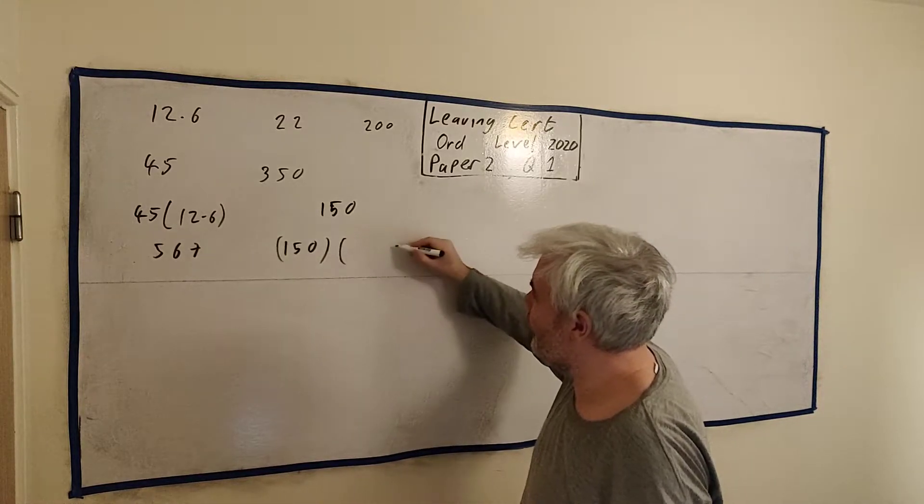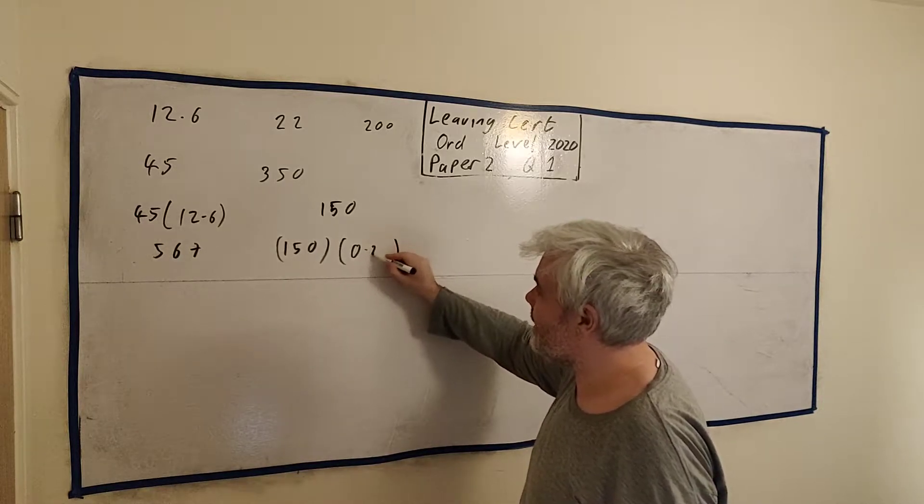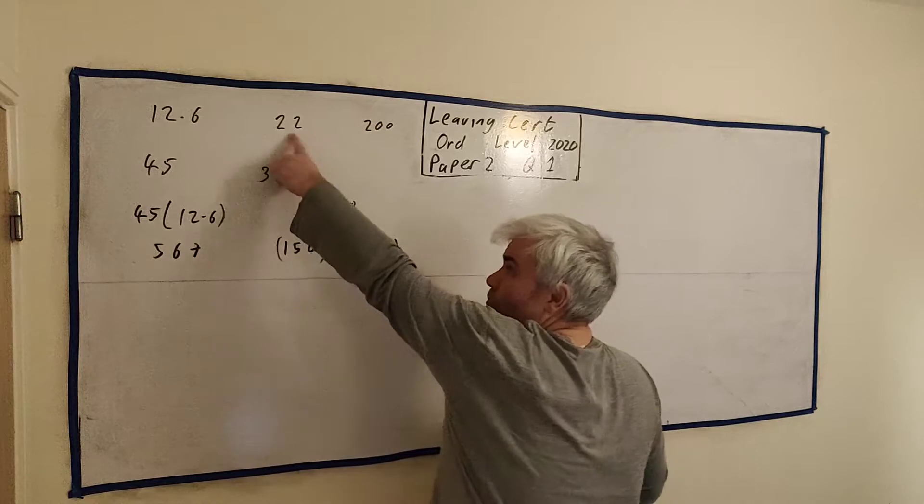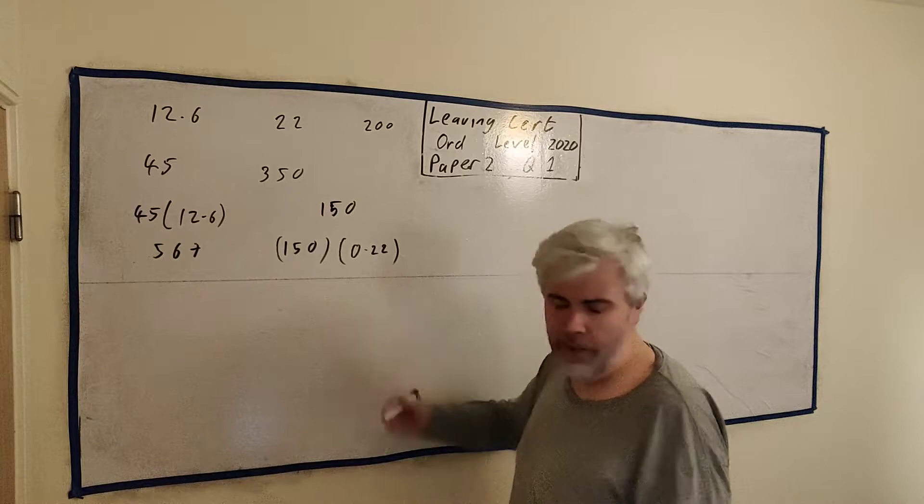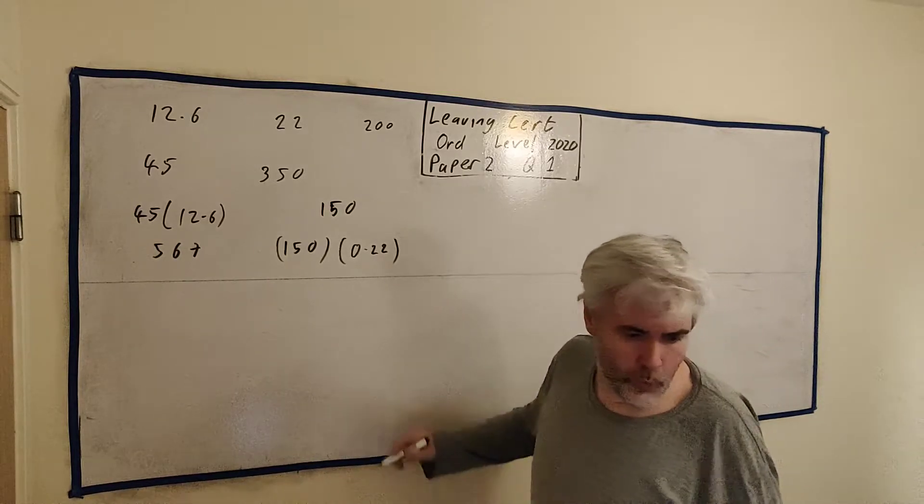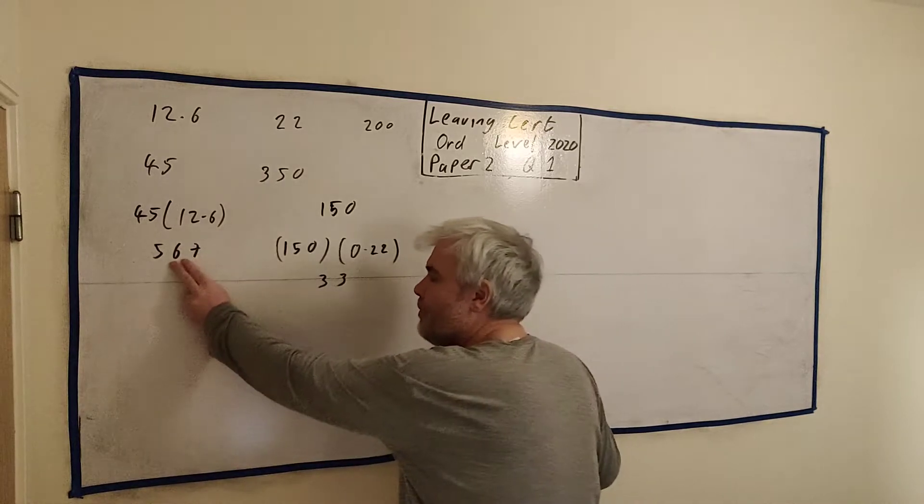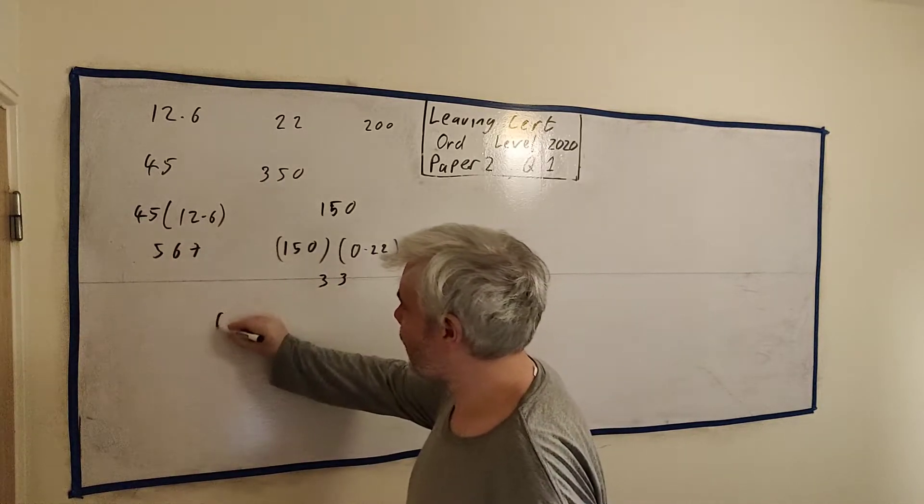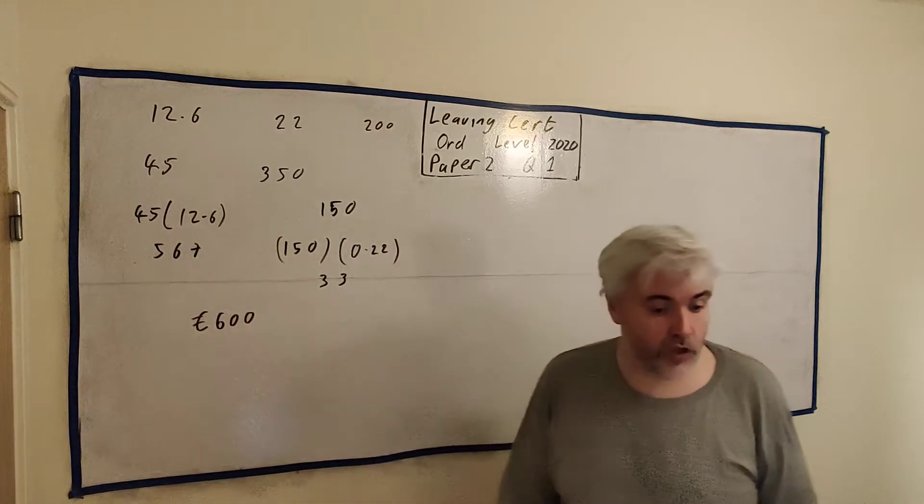Your calculator has a percentage button, so you get 150 percent 22 will give you the answer. But also we can just multiply it by 0.22 because 22% is the same as 0.22 - just divide 22 by 100. That's all, that's the only difference between a percentage and a number. And if we multiply this in, we get €33. So he earns this much from his wage, this much from his commission, and then together we get €600. That's his gross wage.